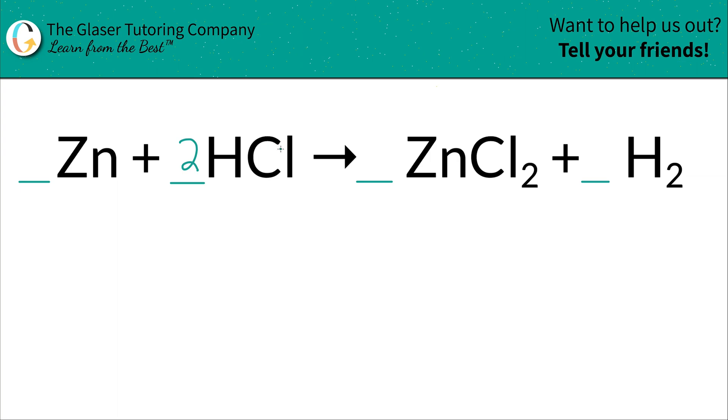Now, how many chlorines do you have on the left-hand side here? Well, remember that there's a subscript of one, but you placed in a coefficient. As soon as you place in that coefficient, you cannot ignore it. Do not ignore it. Don't ignore me. You got to take that into account. So two times one is simply going to be a two. So you got two chlorines on the left.